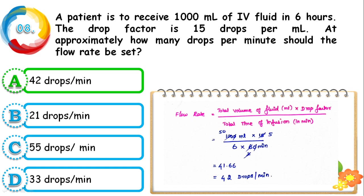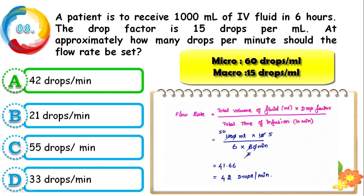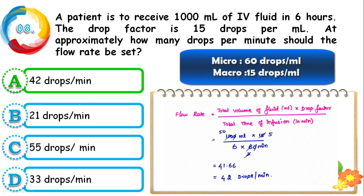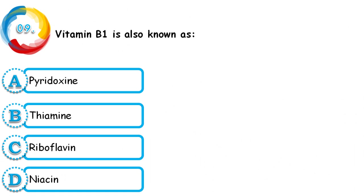Question 9: Vitamin B1 is also known as — pyridoxine, thiamine, riboflavin, or niacin? The correct answer is thiamine. The other vitamins: pyridoxine is B6, riboflavin is B2, and niacin is B3.